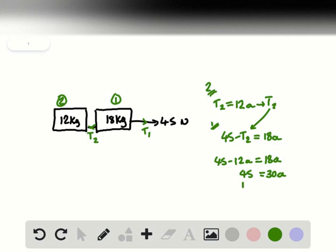45 divided by 30 is 1.5, so acceleration is equal to 1.5. That is, acceleration equal to 1.5 meters per second squared.